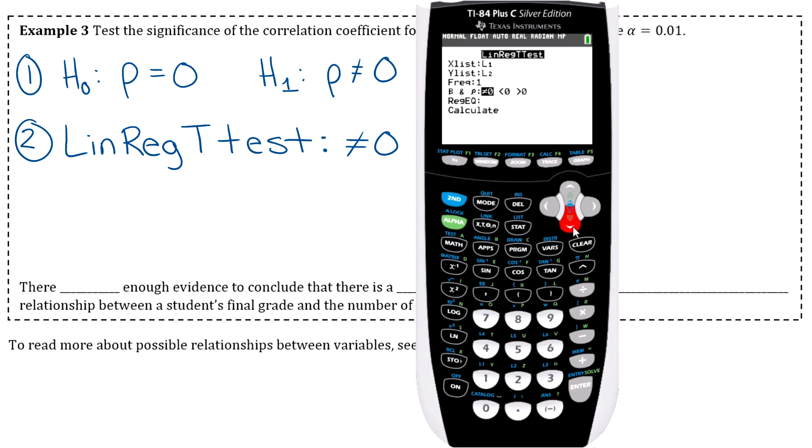Everything should be pretty much good by default. So you have your L1, L2, frequencies 1, don't touch that. You're always just going to highlight the not equal to 0, and then calculate. And then fourth one down there, you can see your p-value is 0.0014, if you round it to four decimal places.